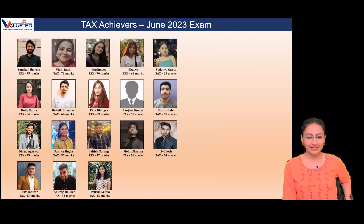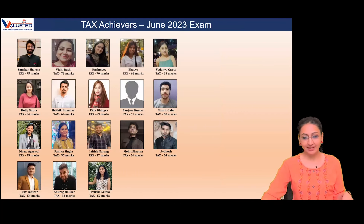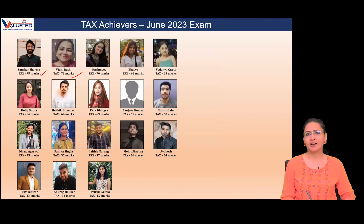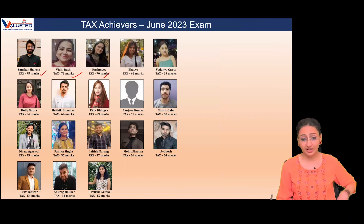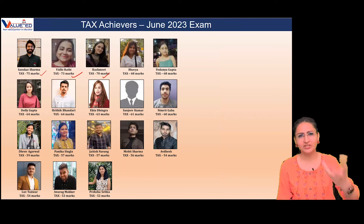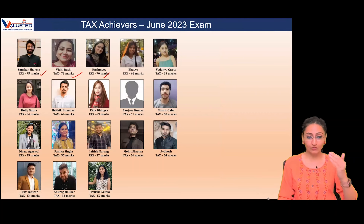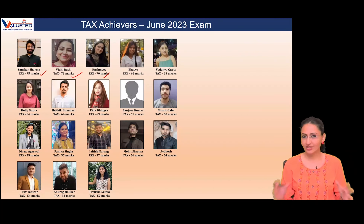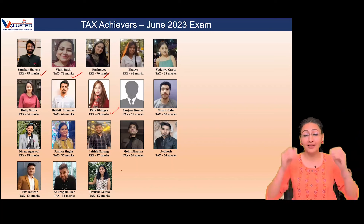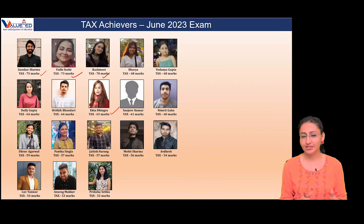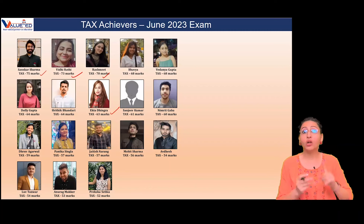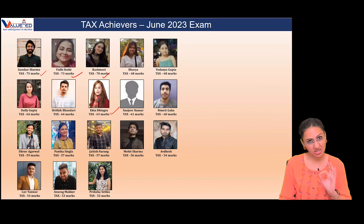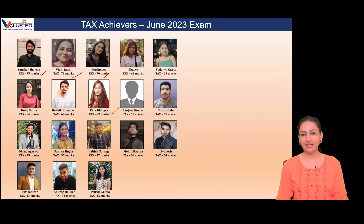First, let's congratulate these students, because in such a long tax syllabus, Sansakar getting 75 marks, Vidhi getting 73 marks, Rashmeet getting 70 marks — that's remarkable. Even 50 marks is an achievement, but these students were also working professionals. If 50 is remarkable, then 70 is double the achievement. Special mention — one student was very nervous, she is married, is the mother of a small child, was also working — and despite all that, she cracked the paper with 63, not just barely passing but with a good margin.